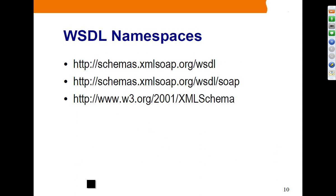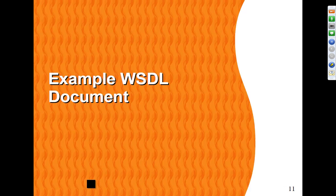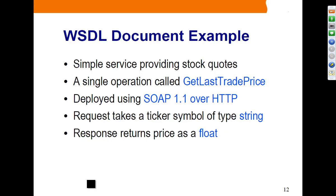These are the WSDL namespaces defined in the WSDL specification. Now we are going to learn the WSDL XML vocabulary — types, message, service, binding, port — using a simple web service example. The web service is a stock quote service with a single operation called get last trade price, deployed using SOAP 1.1 over HTTP. The request message contains a ticker symbol of type string, and the response returns a price of type float.